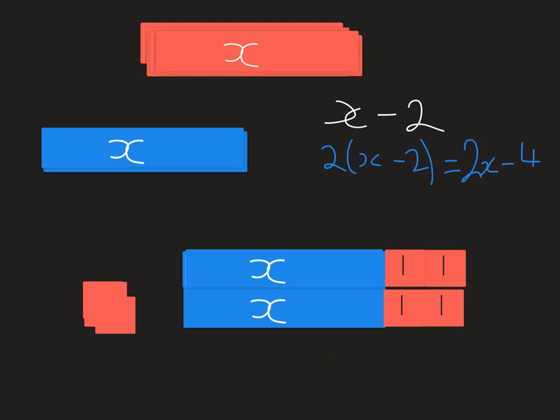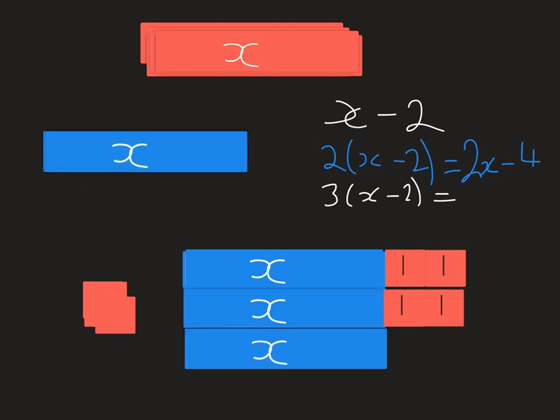What about if I had 3 of them? Can you predict or make with your algebra tiles? What would that be? Well done if you had 3x take away 6.